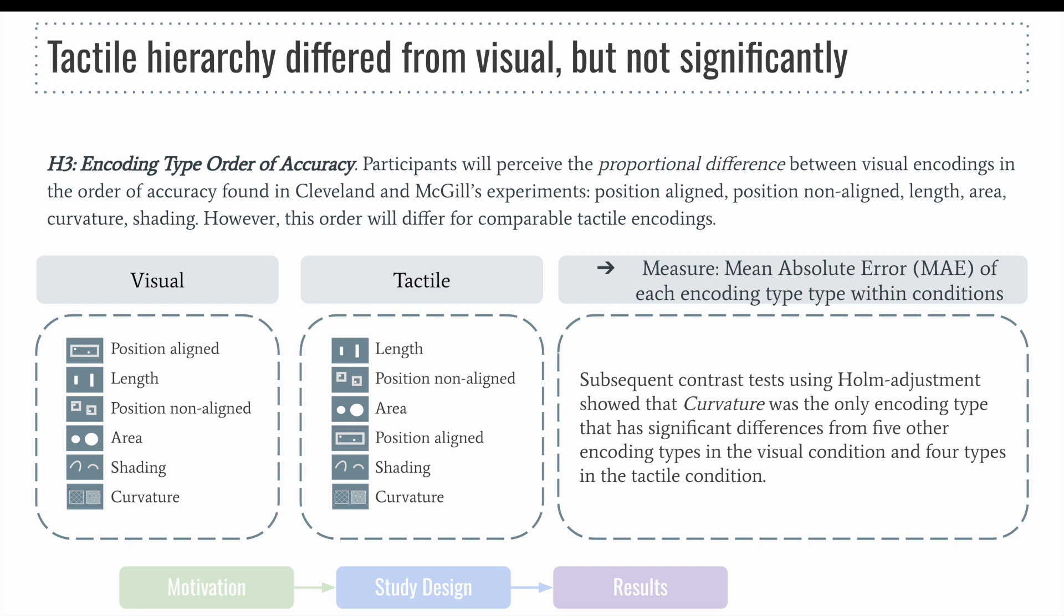Subsequent Holm-adjusted contrast tests revealed that most of the main absolute error for each of the encoding types did not significantly differ from other encoding types with one exception. Curvature was the only encoding type that has significant differences from five other encoding types in the visual condition and four types in the tactile condition.